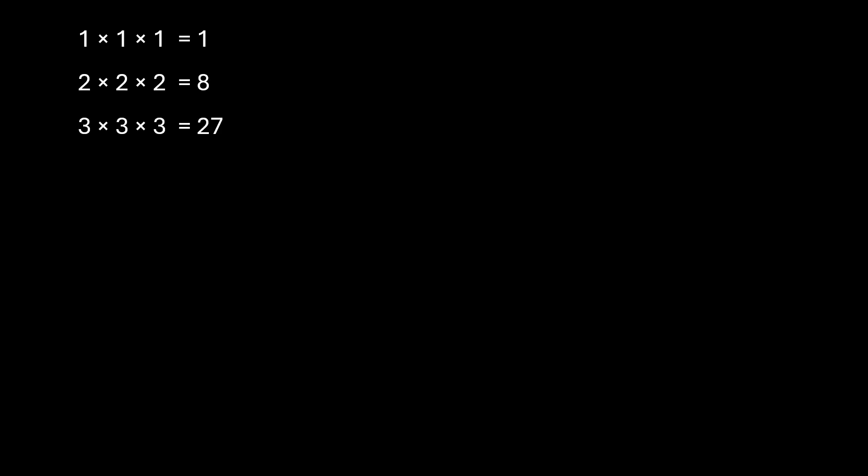Remember how we learned that 1 into 1 can also be written as 1 raised to the power 2 and we call it square of 1. Similarly, 1 into 1 into 1 can be written as 1 raised to the power 3 and this is called cube of 1. So this becomes cube of 1, this is cube of 2, and this is cube of 3.